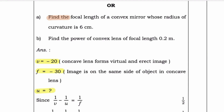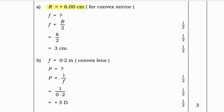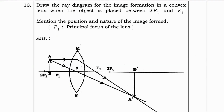Optional question: Find the focal length of a convex mirror whose radius of curvature is 6 cm, and find the power of a convex lens of focal length 0.2 m. For the convex mirror, R = +6 cm, formula f = R/2 = 6/2 = 3 cm. For the convex lens, focal length = 0.2 m, power P = 1/f = 1/0.2 = +5 D.